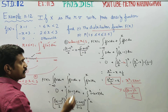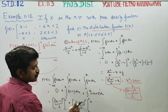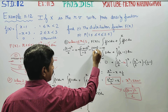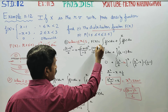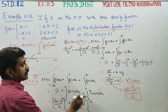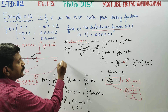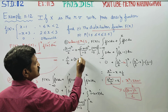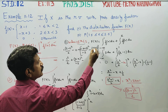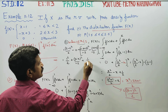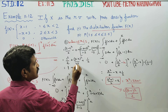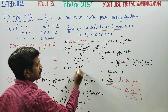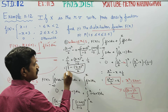Substituting lower limit 2: minus (minus 2 plus 3) squared by minus 2. Upper limit minus lower limit: 2 minus 1 is 1, 1 squared by 2. Combining terms gives 1 minus (3 minus x) whole square by 2. This is the third interval's F of X result.